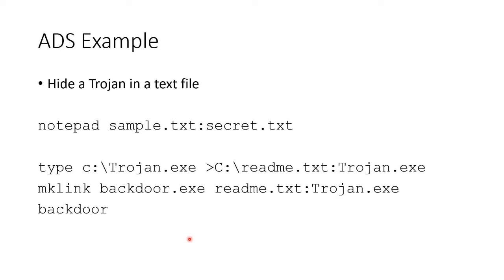Here's another thing we could do. In a DOS prompt, use the type command to create an executable called Trojan — call it anything you like. What we're doing is hiding the Trojan inside a text file called readme.txt. Then we create a link, basically a shortcut in Windows, called backdoor.exe. That link points to the secret stream — the Trojan hidden inside readme.txt. You simply run backdoor.exe and it launches the Trojan.